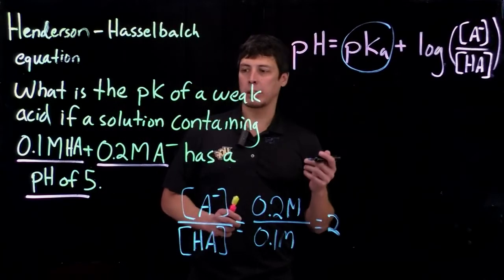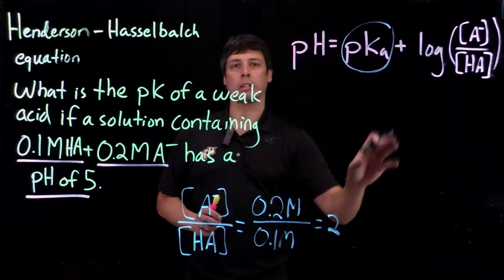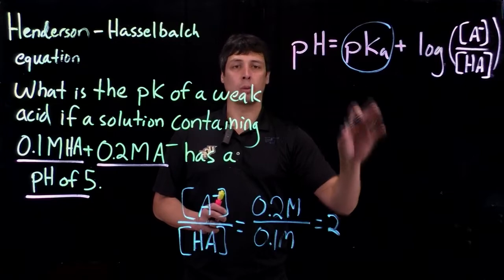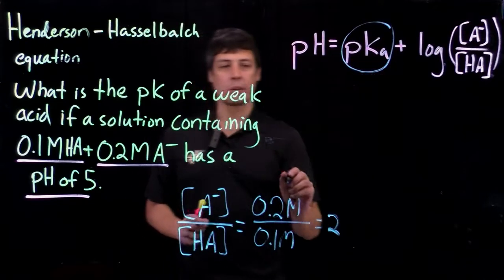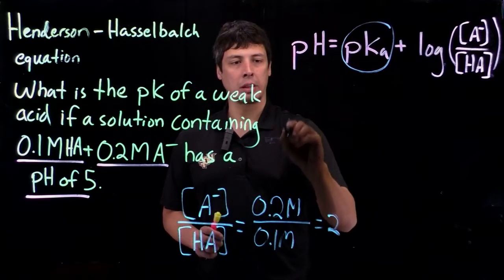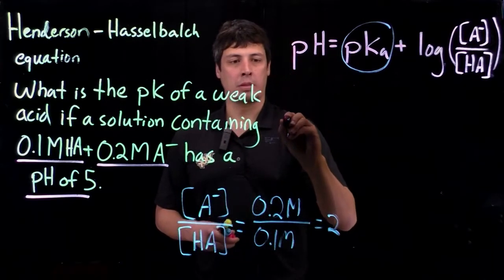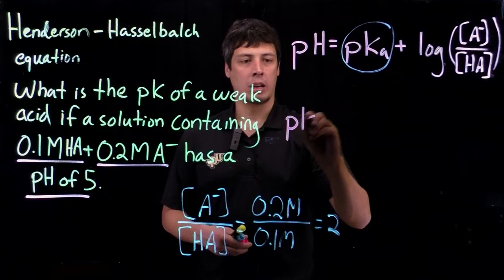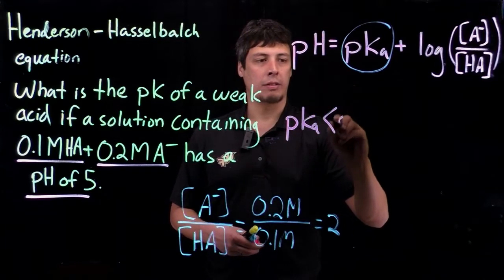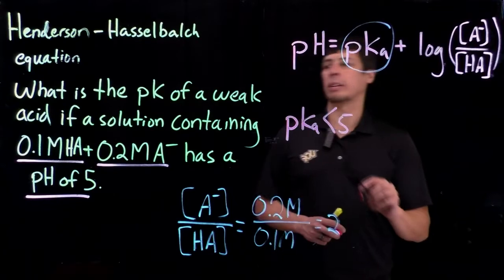So doing this estimation allows us to figure out if, when we actually solve the problem, if we're going in the right direction. So we expect pKa to be less than 5. So let's see if we're right.